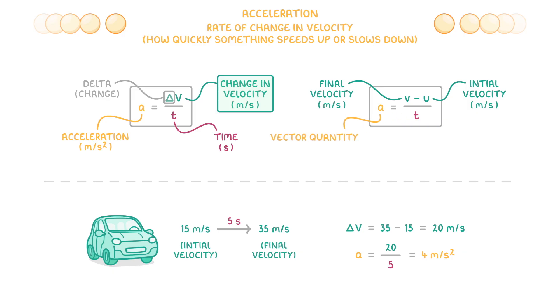Because acceleration is a vector quantity, like velocity is, it has direction as well as magnitude, and so it can be negative as well, which would imply that the object is slowing down or decelerating.